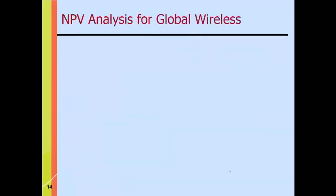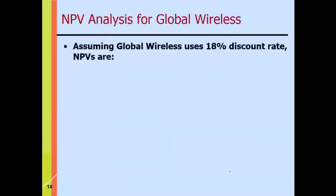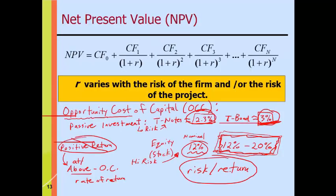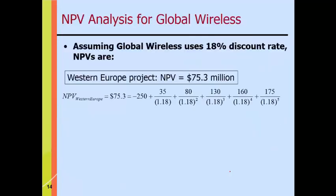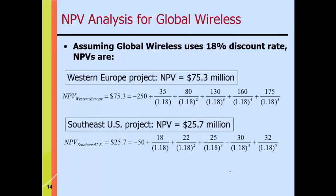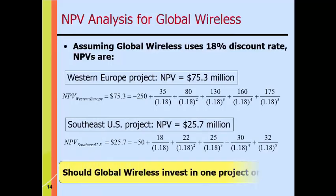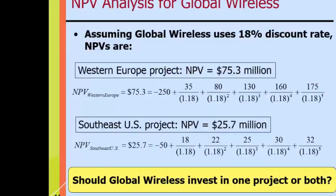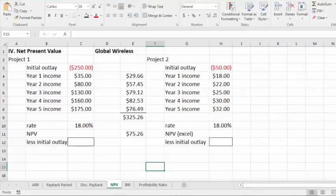Let's run the NPV analysis for Global Wireless assuming an 18% discount rate — in line with the numbers we were just discussing. The Western Europe project has an NPV of $75.3 million, and the Southeast U.S. project has an NPV of $25.7 million. If we've got the money, we should do both. The key question is whether we can raise enough capital. Let's jump into Excel.